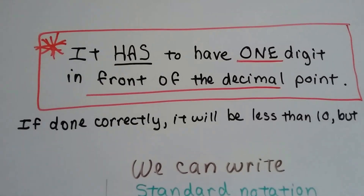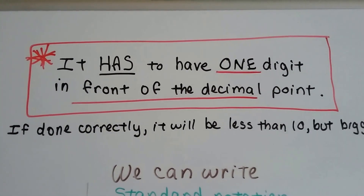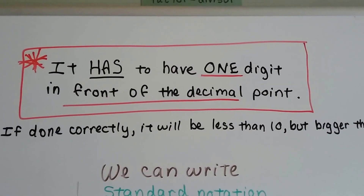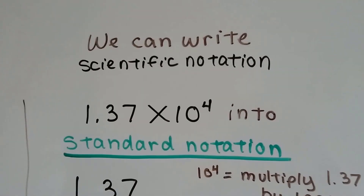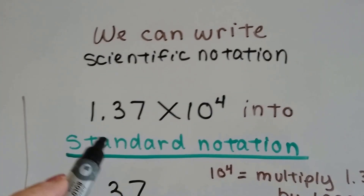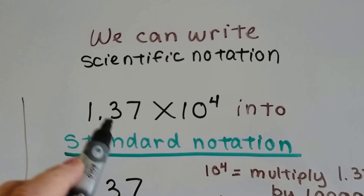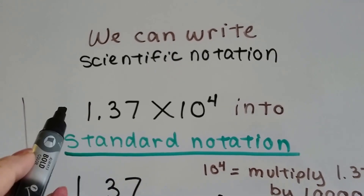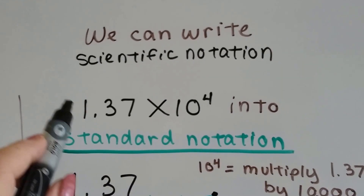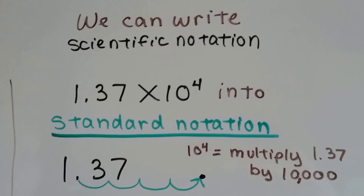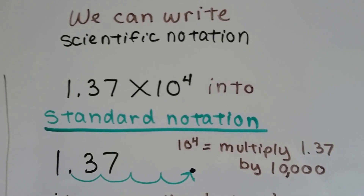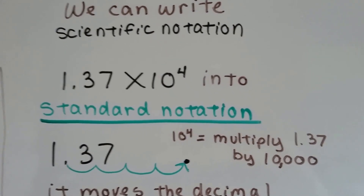It has to have one digit in front of the decimal point, otherwise it's going to be wrong. If it's done correctly, it'll end up being less than 10 but bigger than 1. This is written in scientific notation — it's bigger than 1 because it's 1.37, but it's less than 10 because we don't have anything in the tens place. So we can write 1.37, which is 1 and 37 one-hundredths, into standard notation.